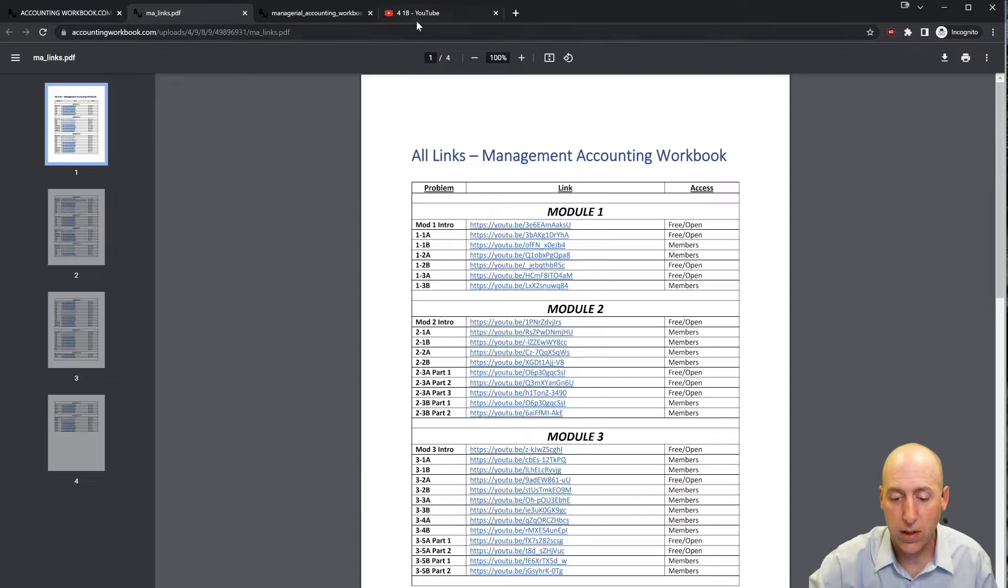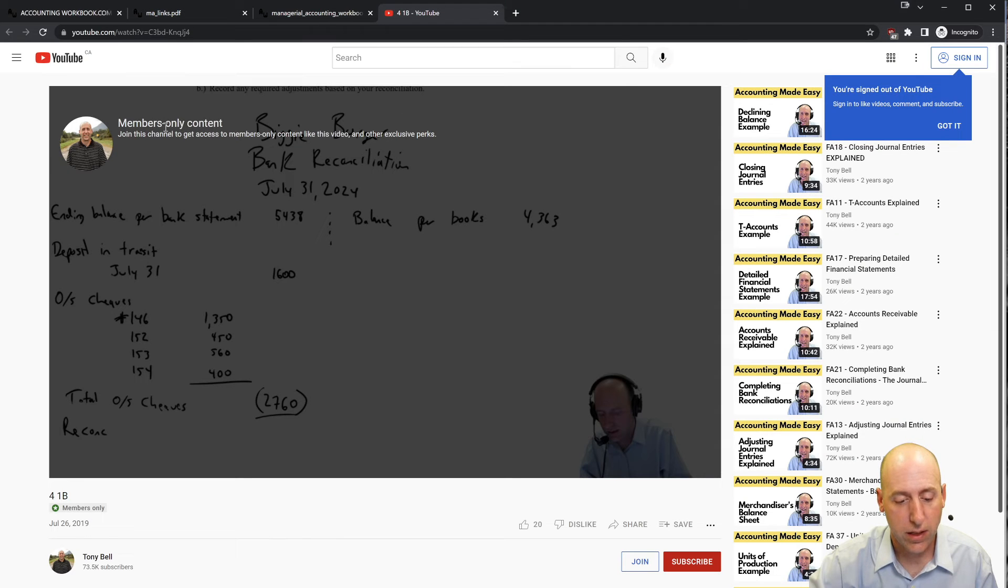If you click one of the members links, it'll take you to a page that says members only content. If you'd like access to that content, just hit the join button.